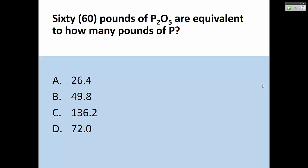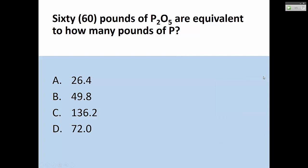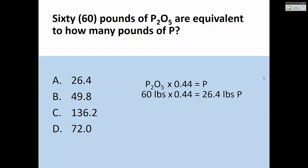Second practice question: You have 60 pounds of phosphate — how many pounds of phosphorus is that equivalent to? We know expressing it as an element makes it look like you have less than expressing it as an oxide. So we know the answer can't be greater than 60. The conversion factor is 0.44, which is roughly half. So we could estimate pretty clearly without even getting out a calculator that the answer has to be around 26-27 pounds. Know those two factors: 0.44 for phosphorus conversion and 0.83 for potassium. Elemental expression makes it look like you have less than oxide expression.